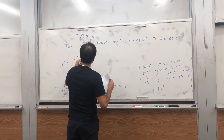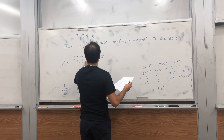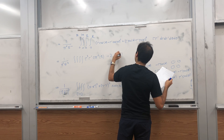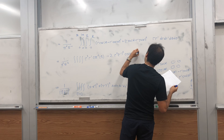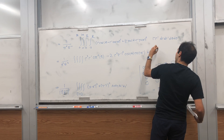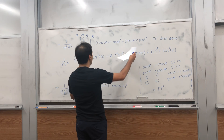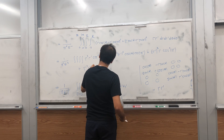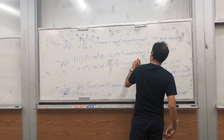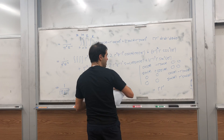So we have 1/(π²r⁴) times the quadruple integral. Expanding (r cosθ − r' cosθ')² + (r sinθ − r' sinθ')², and multiplying by r·r', we get: r³r' cos²θ − 2r²r'² cosθ cosθ' + r r'³ cos²θ' + r³r' sin²θ − 2r²r'² sinθ sinθ' + r r'³ sin²θ', integrated with dr dr' dθ dθ'.